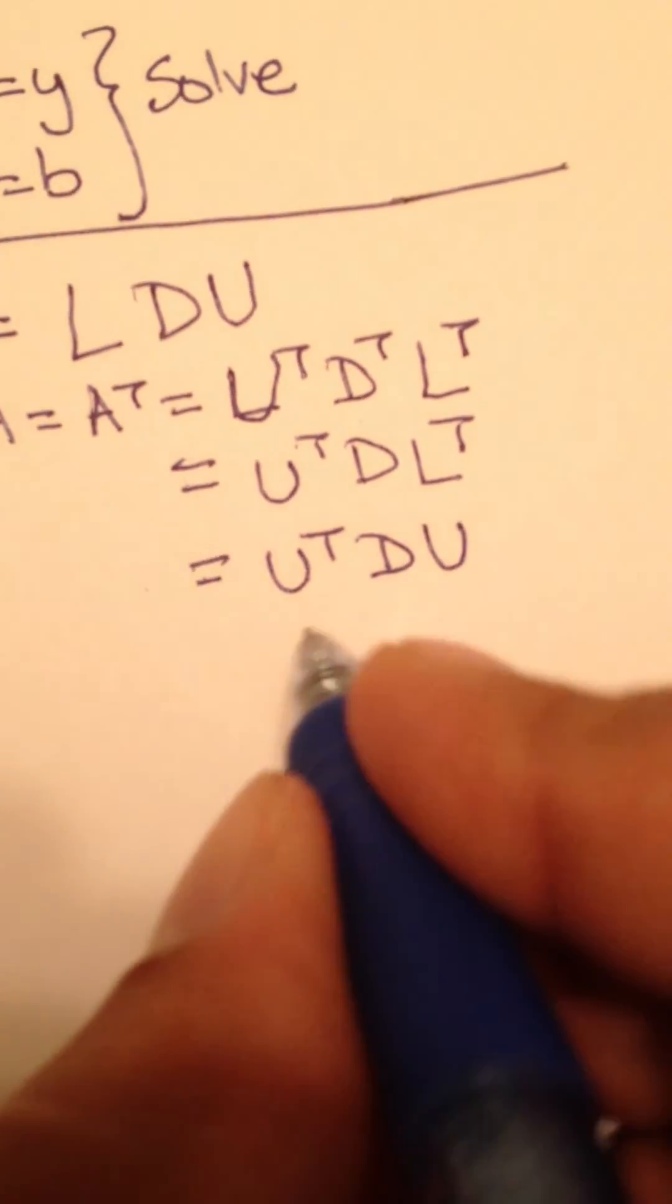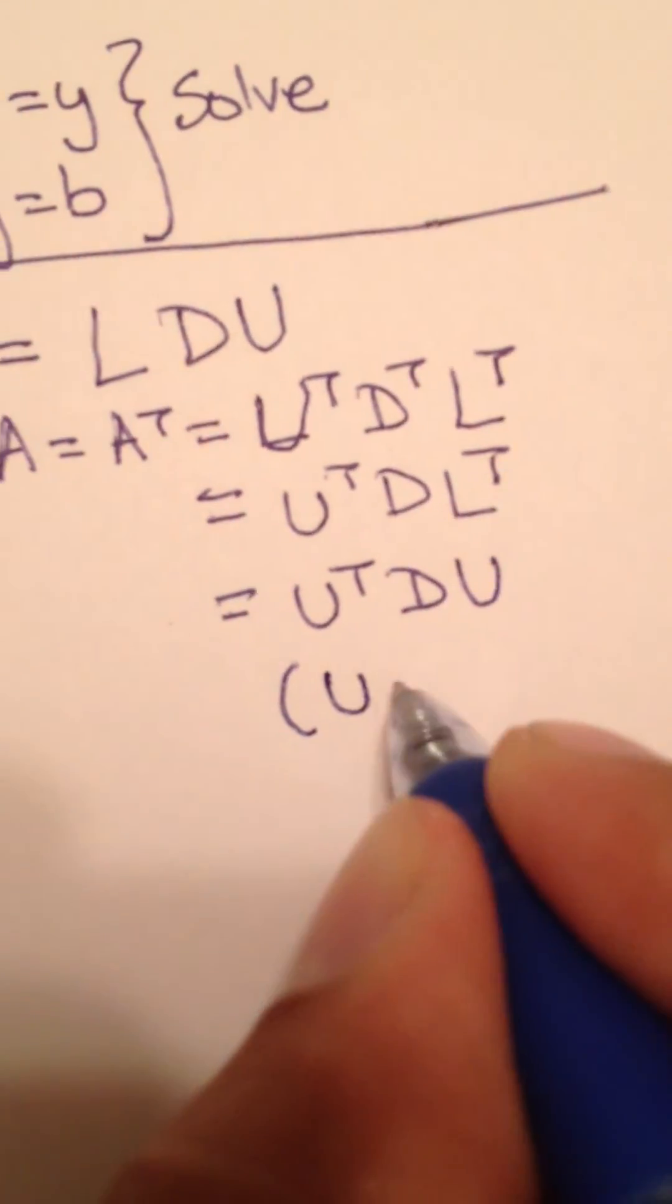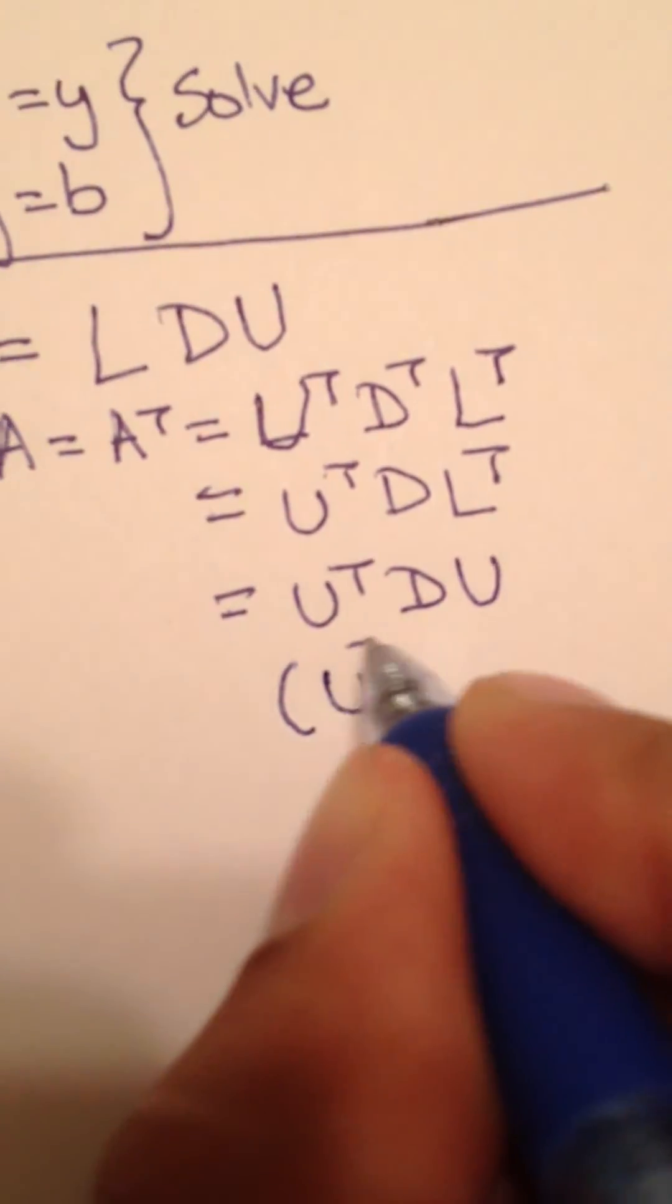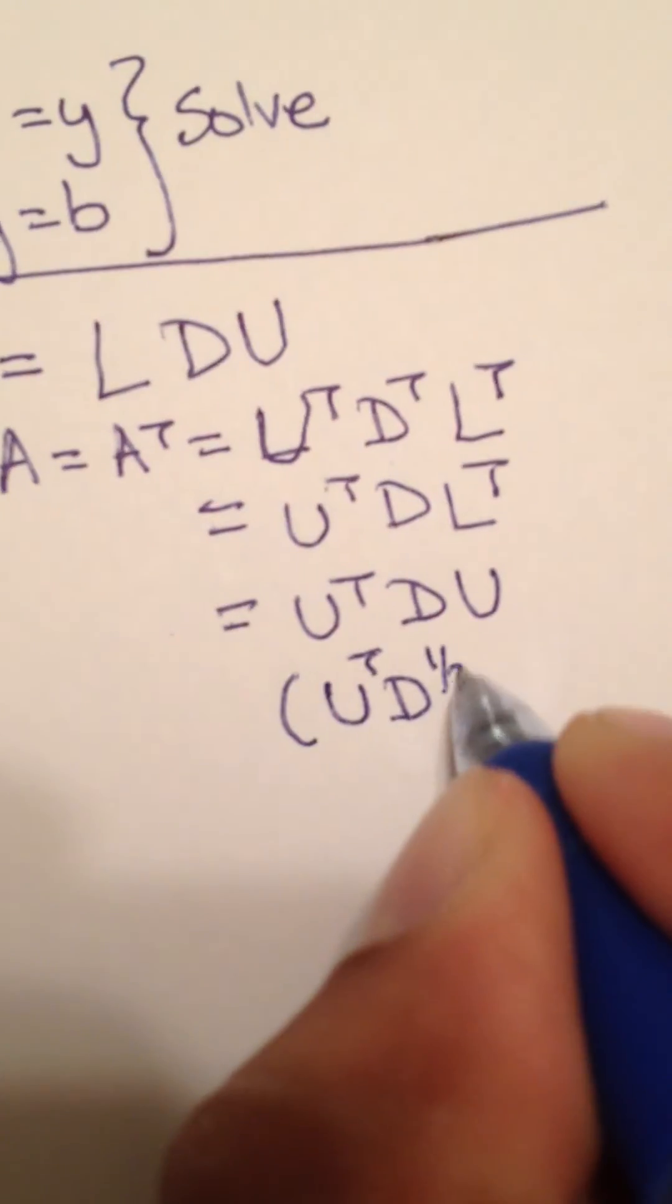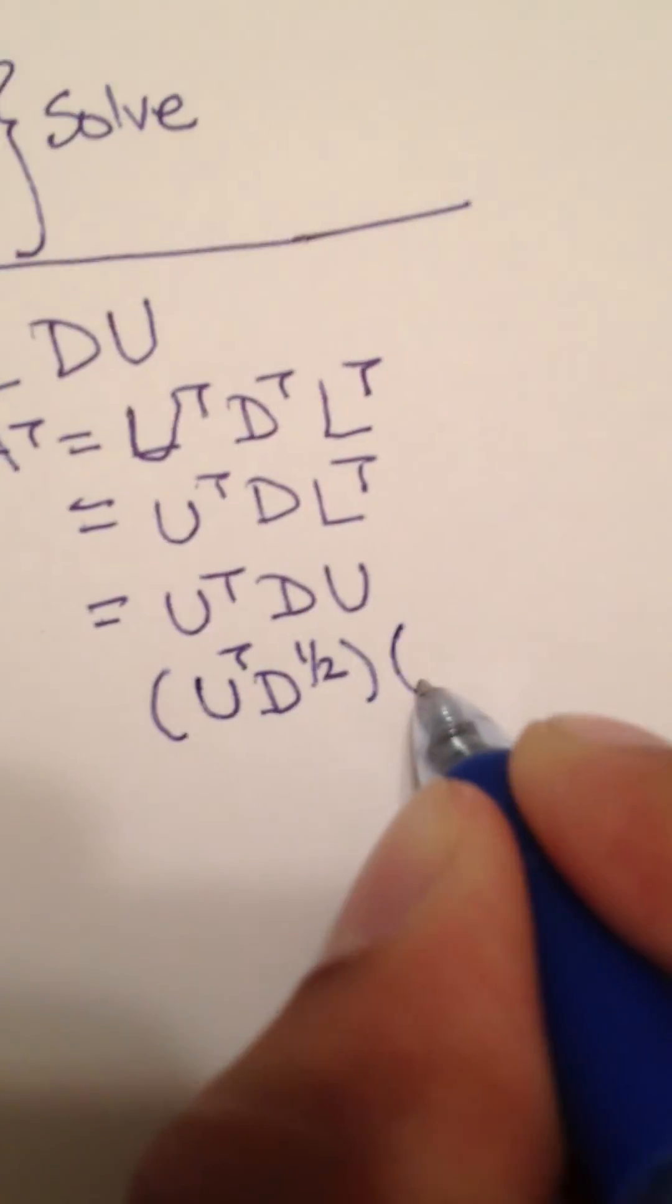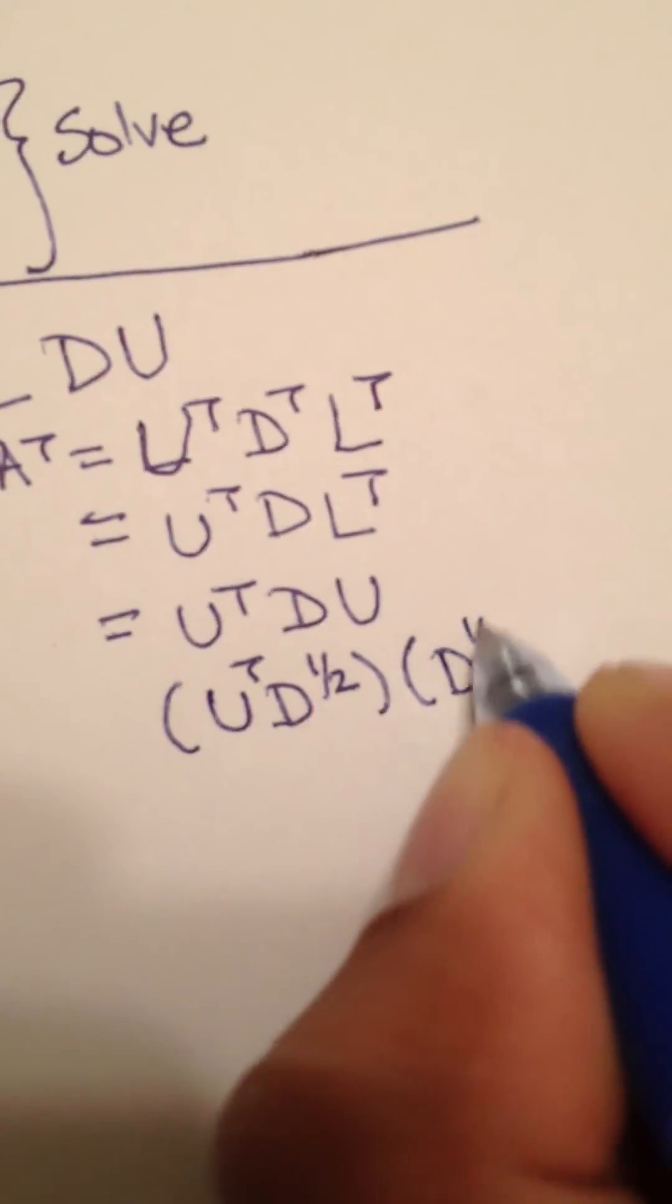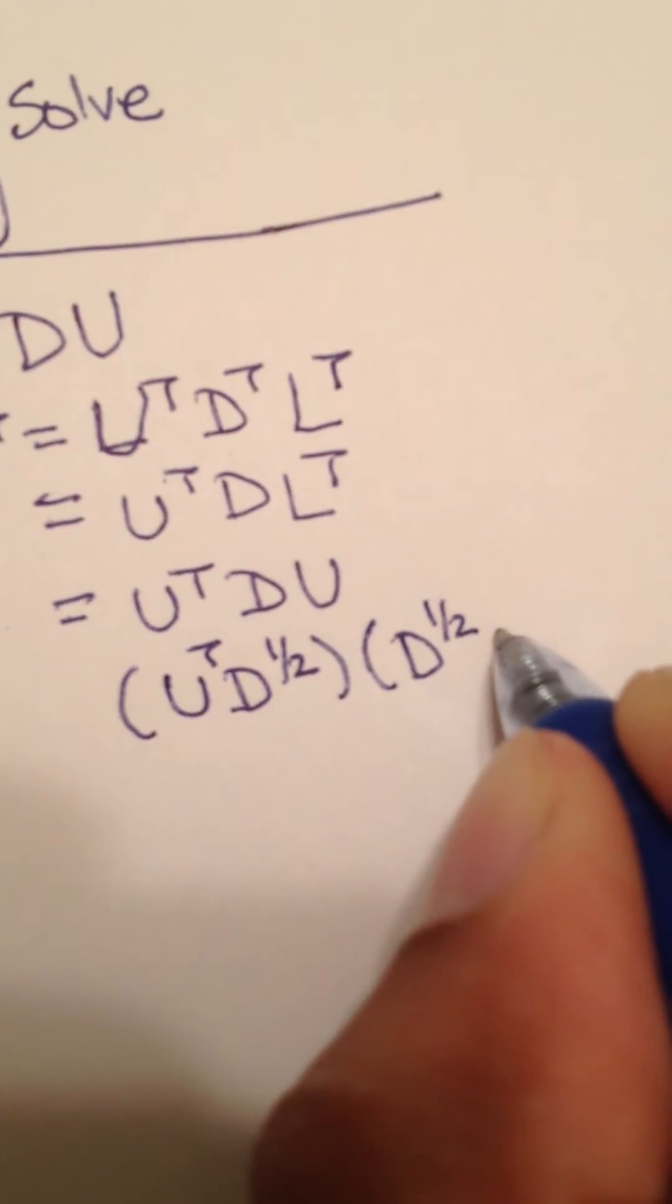Since you write it this way, U transpose D U, you can write this as U transpose square root of D, the other part of the square root of D, U.